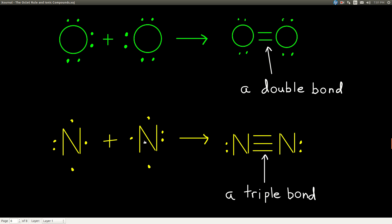When two nitrogen atoms come together, each nitrogen needs 3 more electrons to have 8 — to be like the nearest noble gas. So they each share 3 valence electrons, forming a triple bond. Each nitrogen now sees 2, 4, 6, 8 valence electrons. The octet rule is satisfied, and we've formed a triple bond.